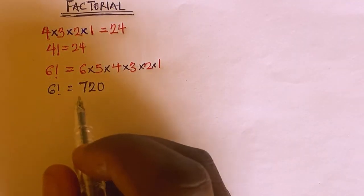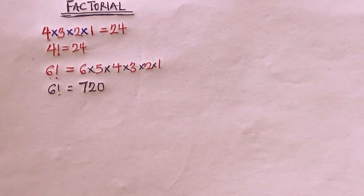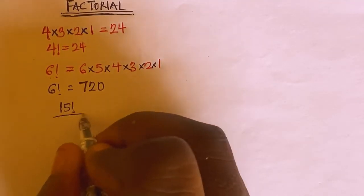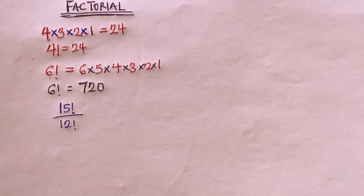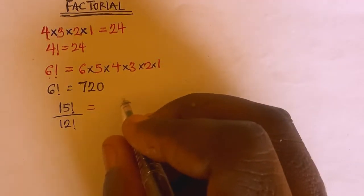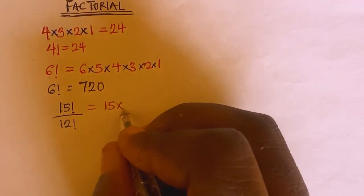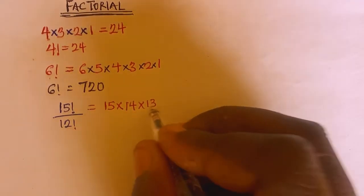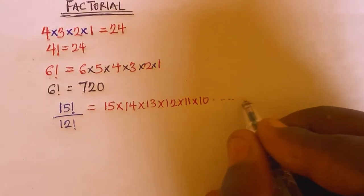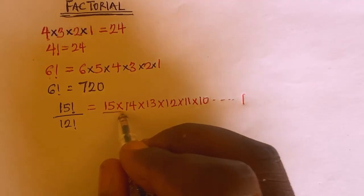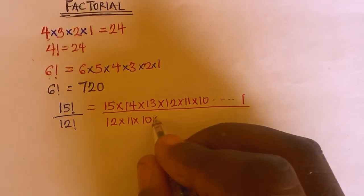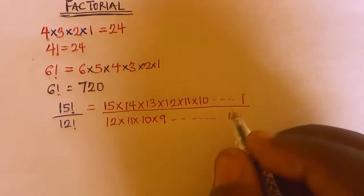Now, suppose we are asked to find the value of 15 factorial divided by 12 factorial. So, 15 factorial is 15 multiplied by 14 multiplied by 13 multiplied by 12 multiplied by 11 multiplied by 10, and so on down to 1. Then you are dividing by 12 factorial, which is 12 multiplied by 11 multiplied by 10 multiplied by 9, down to 1.